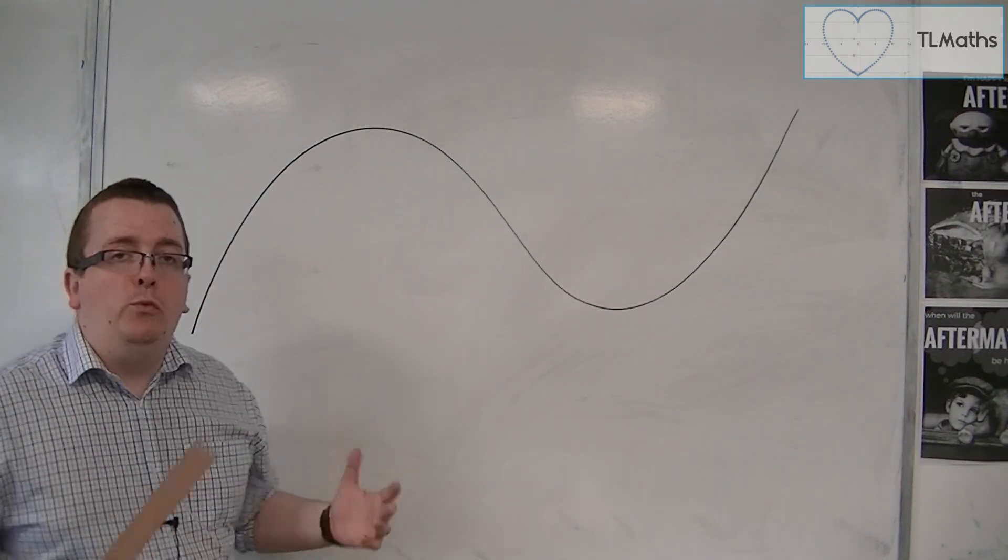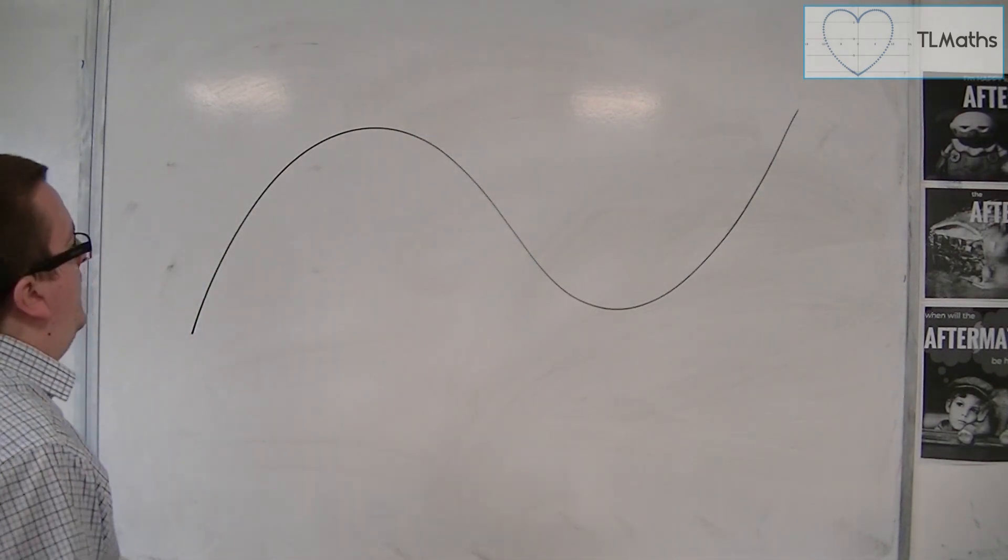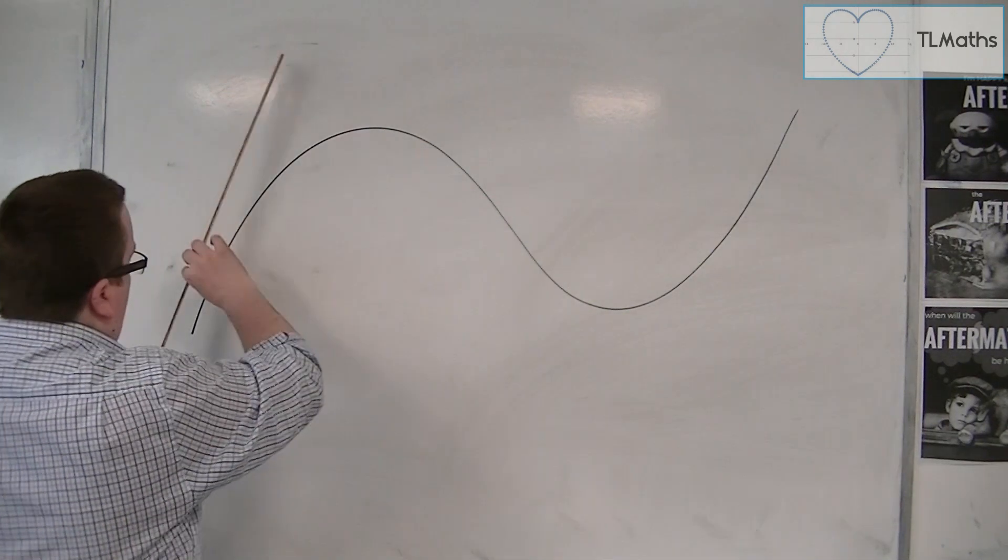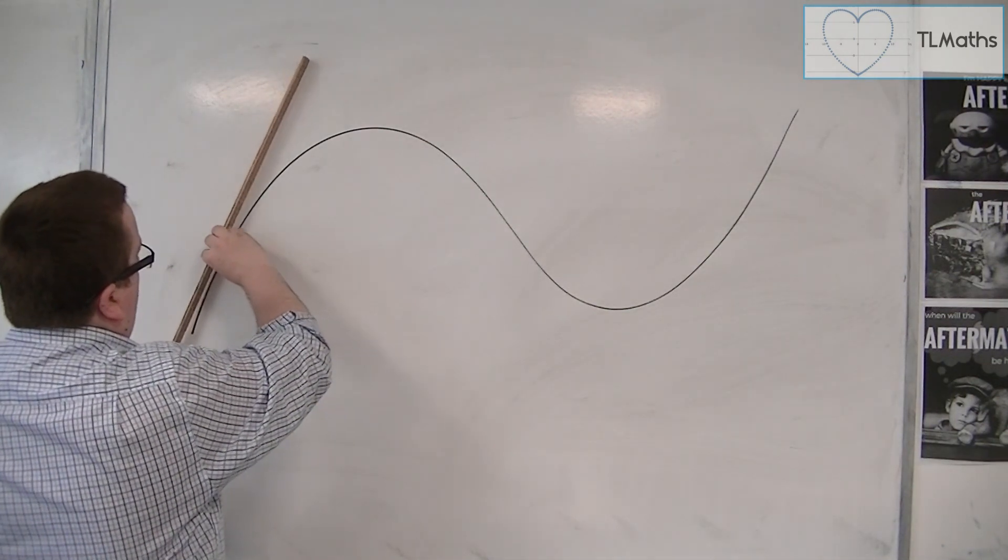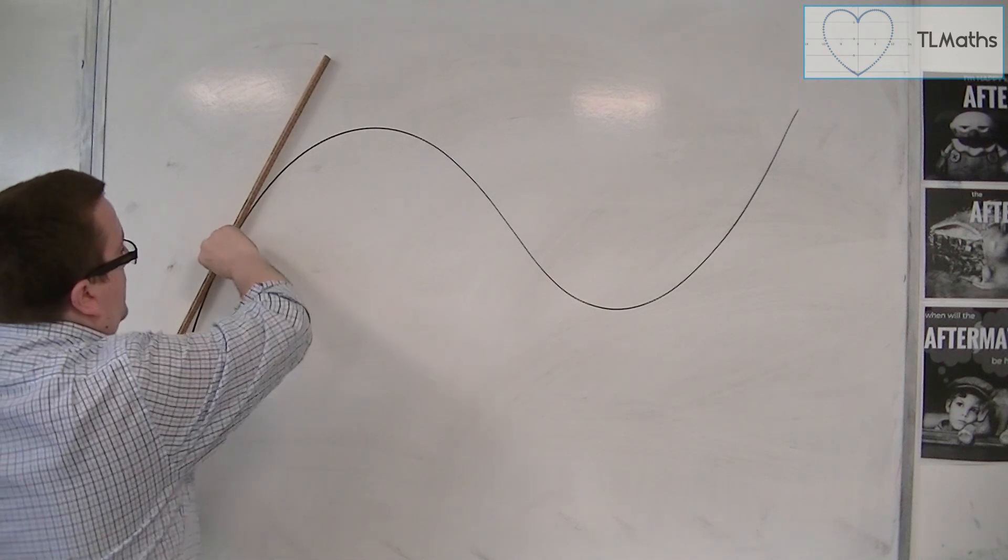There are some properties that we can already identify. We know that the curve, for example here, if I found the gradient of the curve at that point, the gradient would be positive.